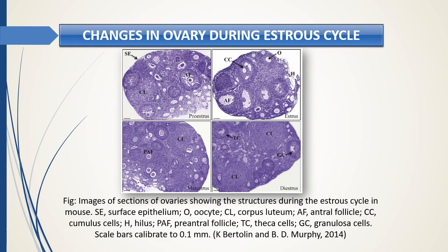Here are images of sections of ovaries showing structures during the estrus cycle. In the proestrus phase, after the animal attains maturity, the hormones of the hypothalamus — GnRH — then pituitary hormones, mainly follicle-stimulating hormone, will initiate development of follicles inside the ovaries. Those developing follicles progress from primary to secondary to tertiary stages.